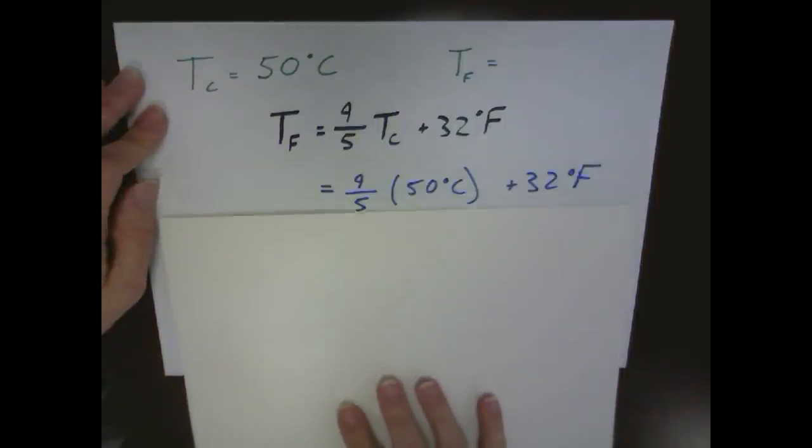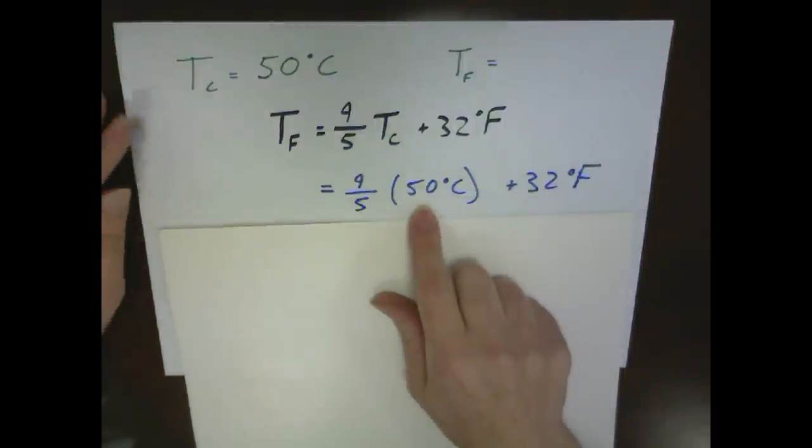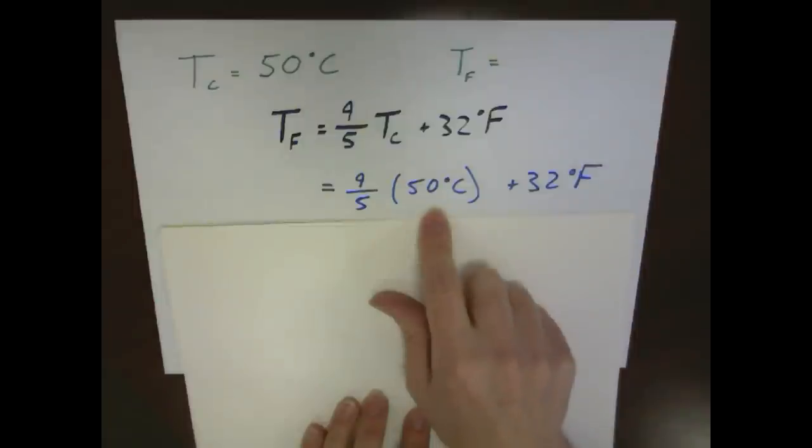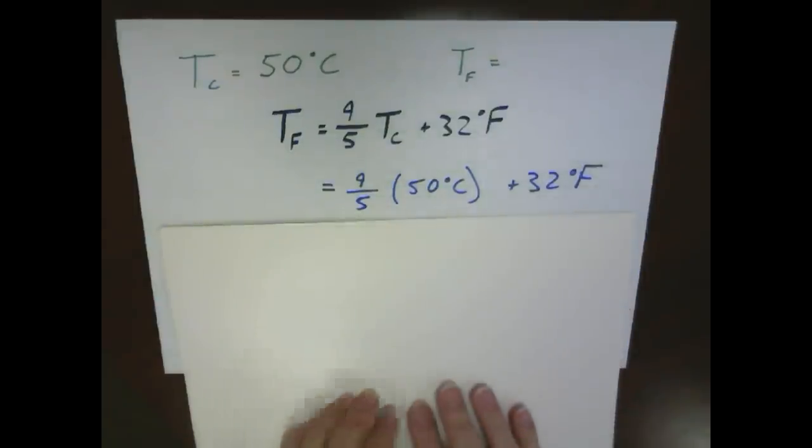So what we do is we start by actually plugging in our temperature in Celsius. So 9/5 of 50 degrees plus our offset of 32 degrees.